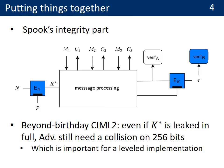Putting things together, the integrity of Spook is guaranteed in the presence of leakage, thanks to the TBC-based key generation function and tag generation function. Beyond-birthday CIML2 guarantees that even if the ephemeral key K-star is leaked in full, the adversary will still require a collision on 256 bits in order to mount a forgery. Such a guarantee is important given the rationale of leveled implementations, where the message processing and ephemeral secrets may not be strongly protected against side-channel attacks.